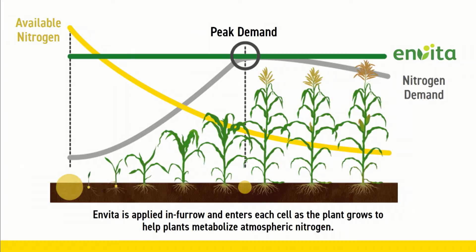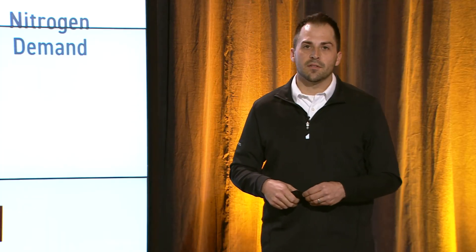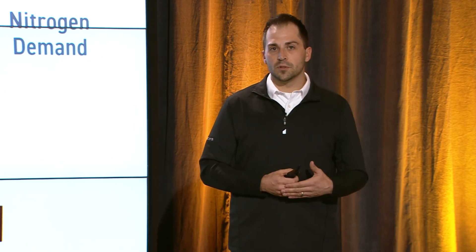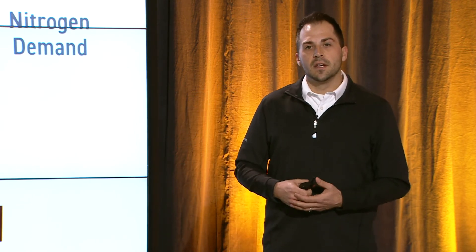Think of soybeans — the air we breathe is 78% nitrogen. As legumes do, they create a symbiotic relationship in the soil with rhizobium, fixing atmospheric nitrogen for their nitrogen needs, and Invita goes to work helping the corn plant do the same thing.